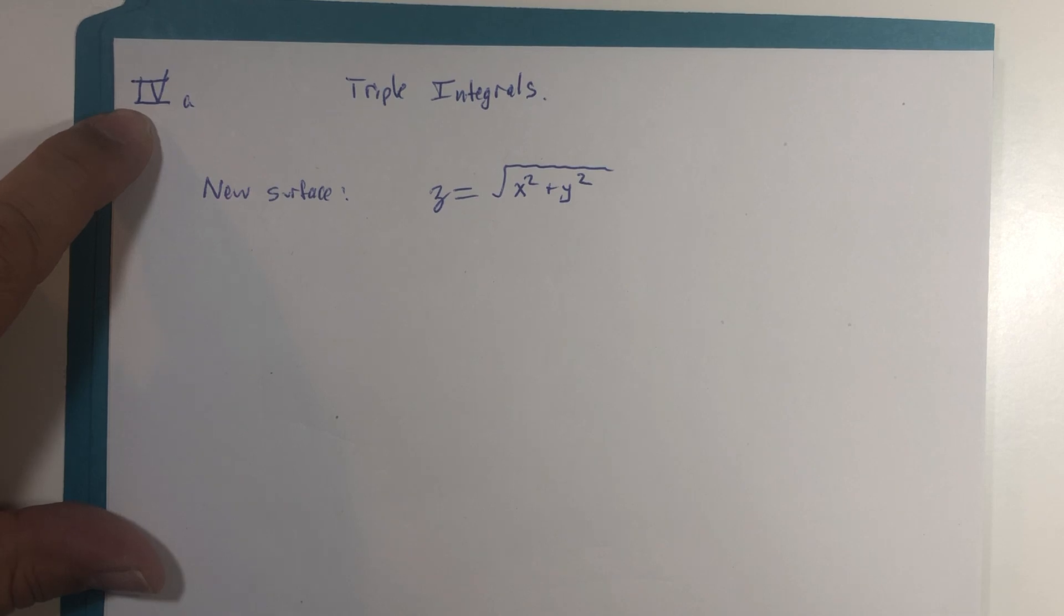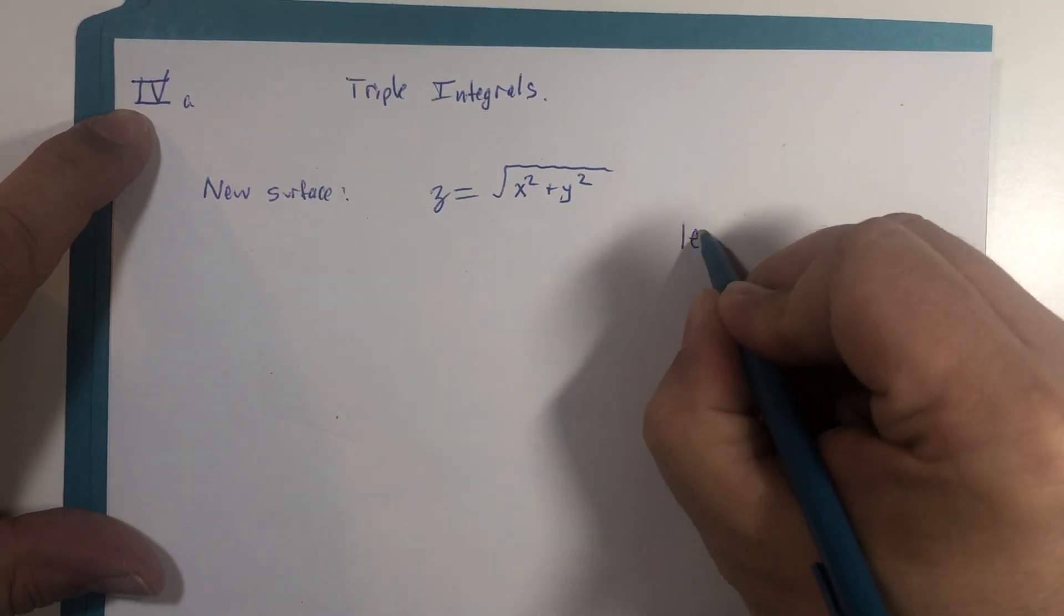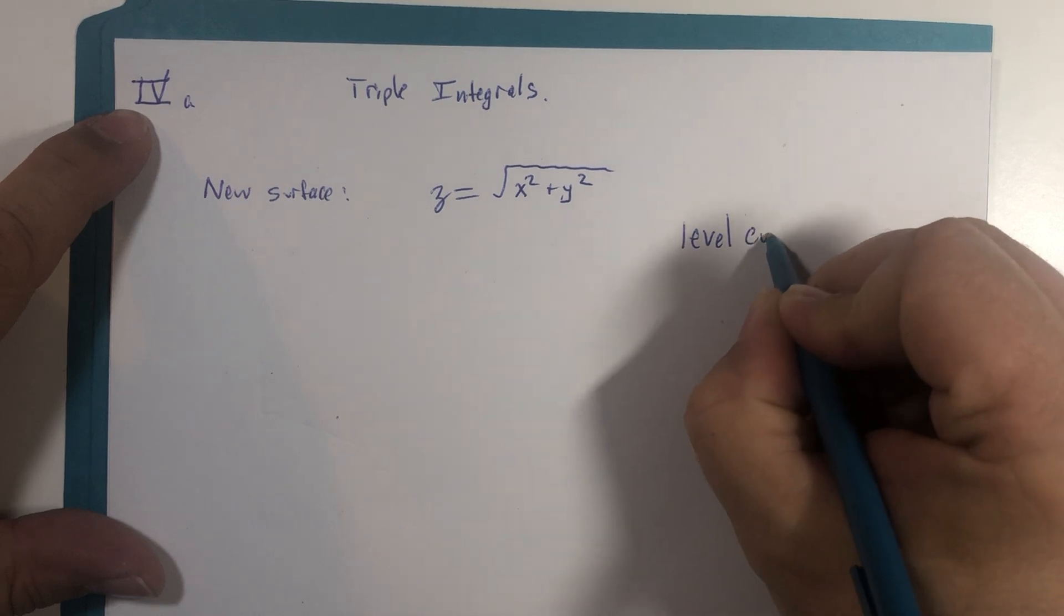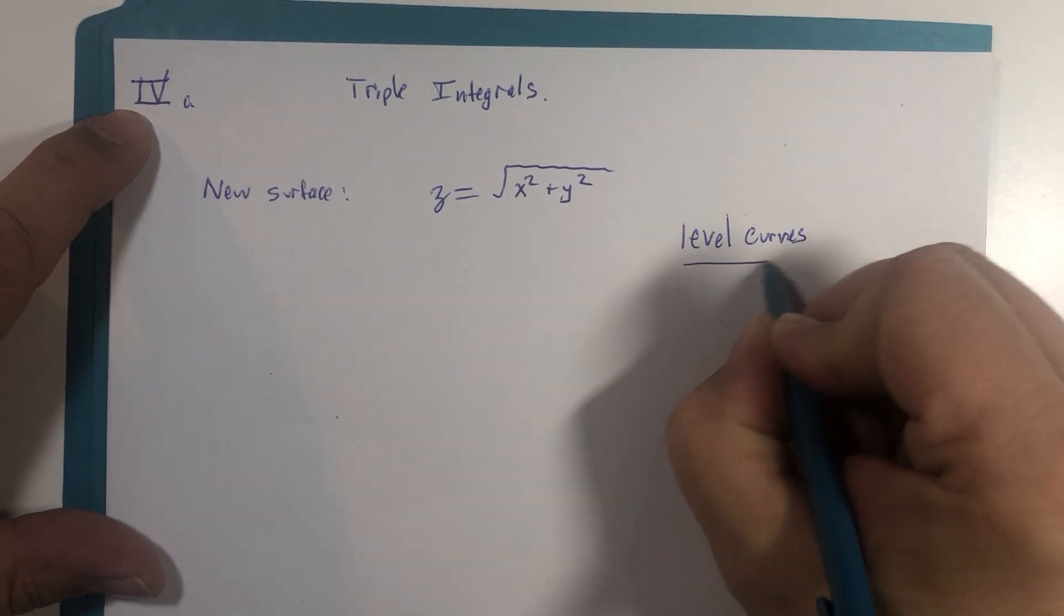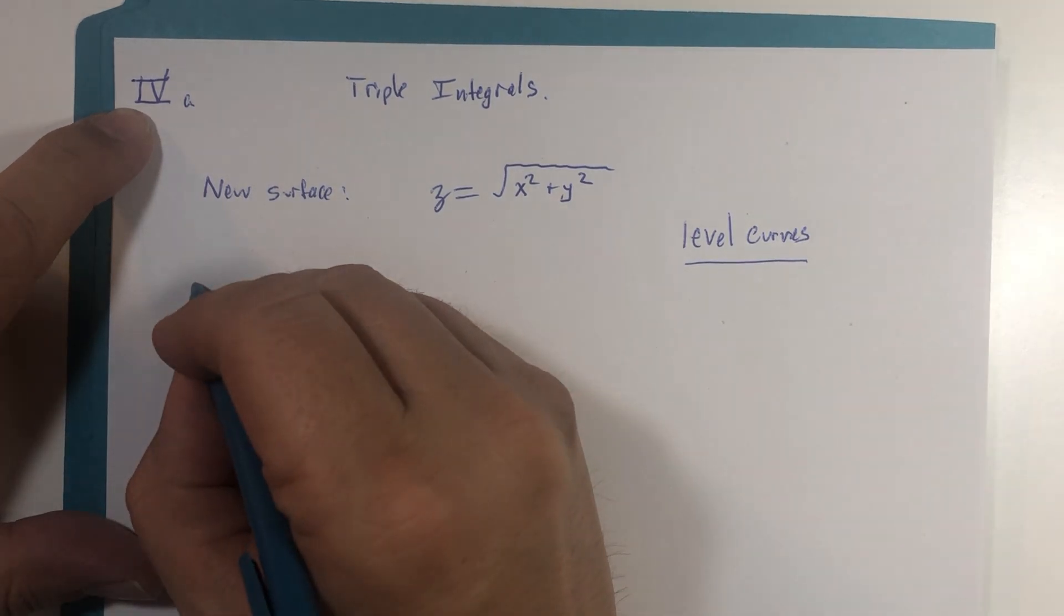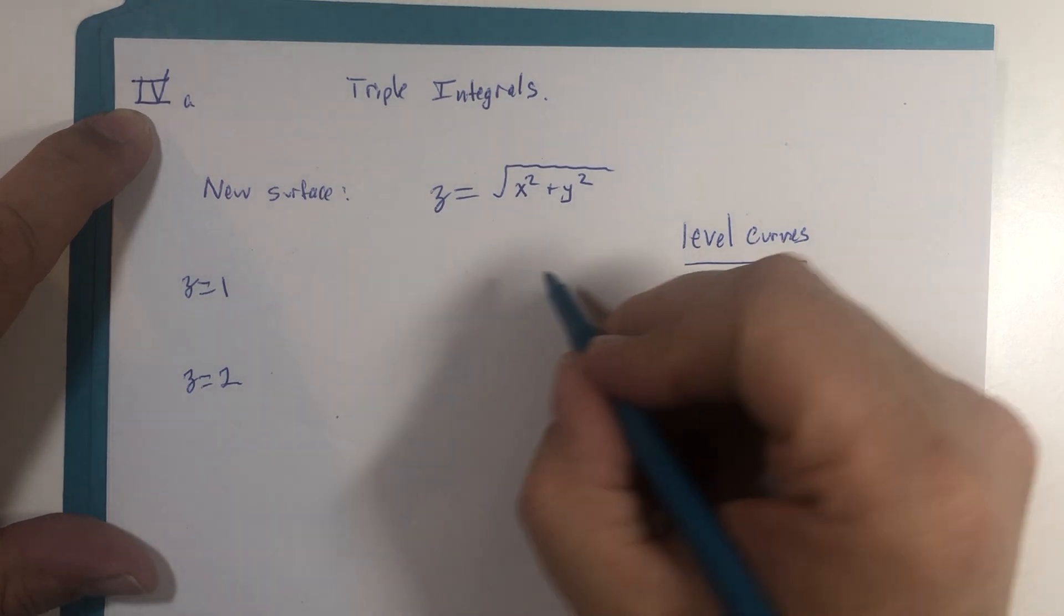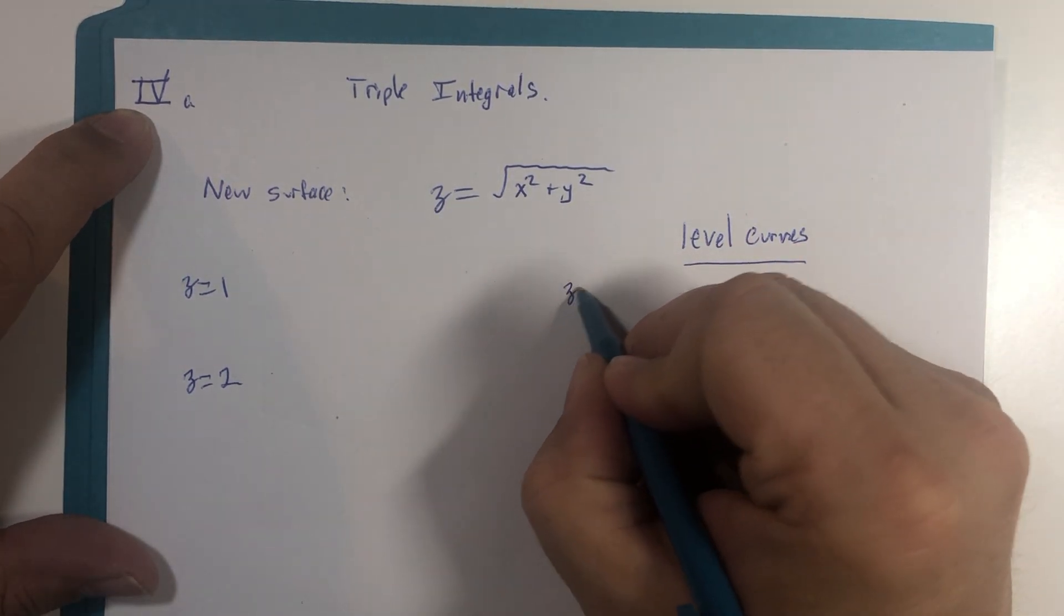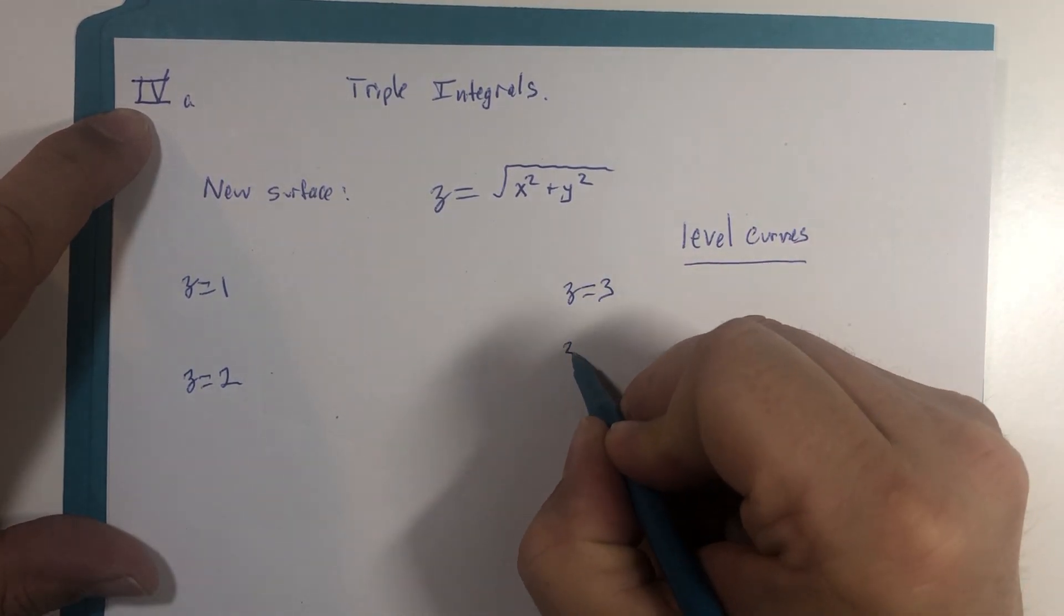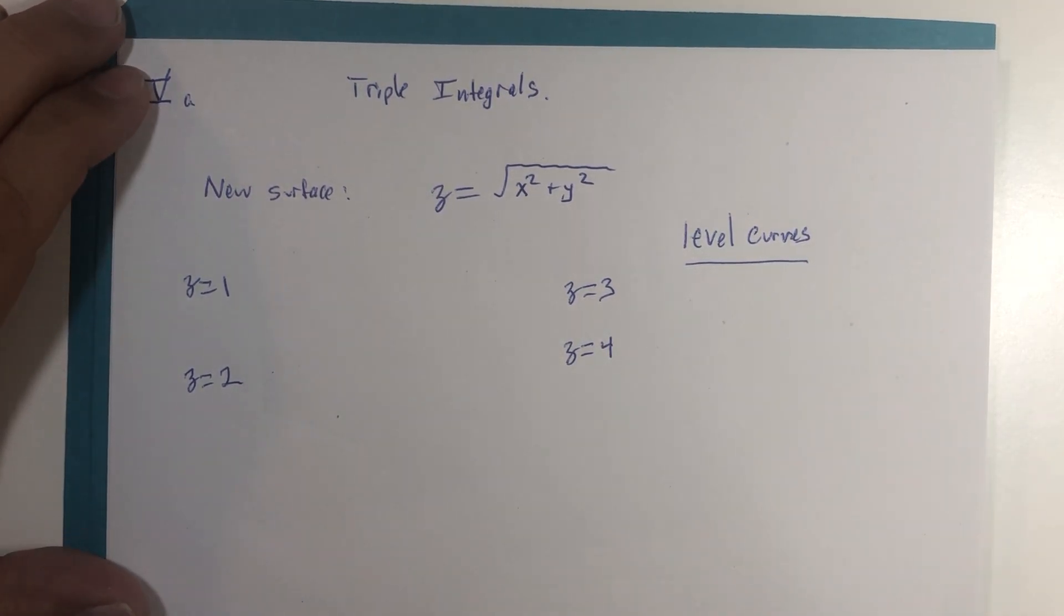So what I'm going to do is use the concept of level curves to approach this particular example. What if z equals 1, what if z equals 2, what if z equals 3, and z equals 4, just to get an idea what this looks like.